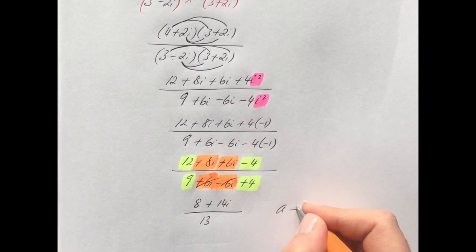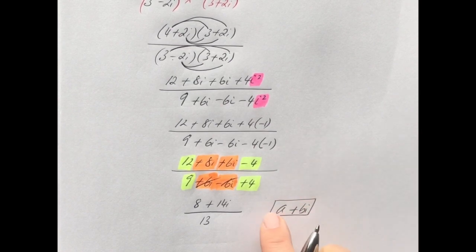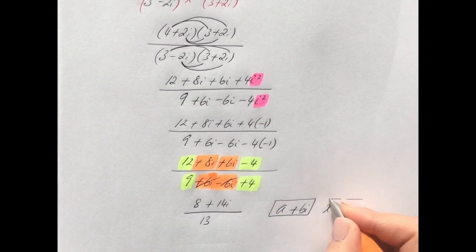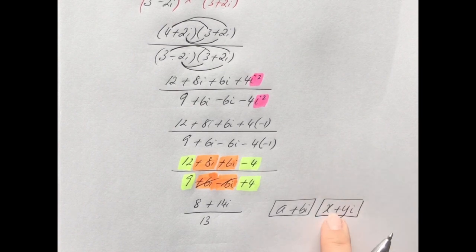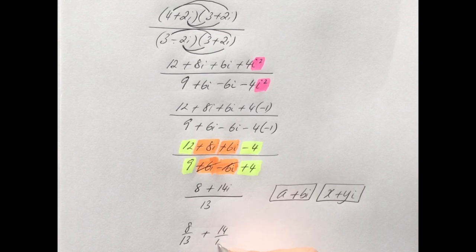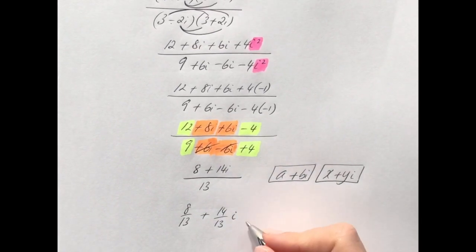They ask for the answer in the form x plus yi — same idea as a plus bi. Divide both terms by 13: 8 over 13 plus 14 over 13 i. That is the final answer.